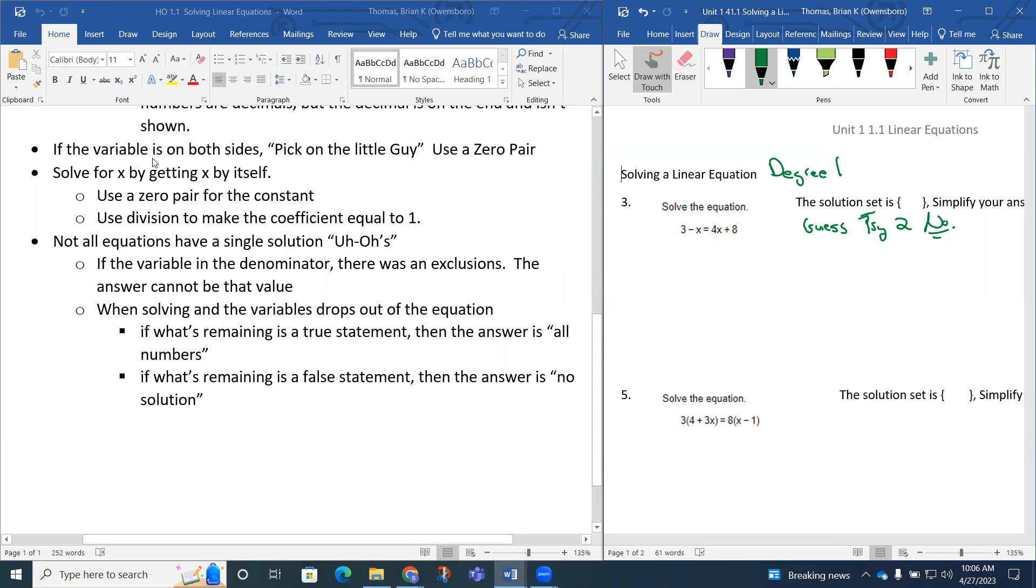The next thing we want to do is, if the variable is on both sides, pick on the little guy and use a zero pair. Notice how x is on both sides. There's a negative x and a positive 4x. The negative number is considered the little guy. I want to use the zero pair of negative x, and the opposite of negative x is positive x. So I want to add x here. The property of equality says whatever you do to one side, you have to do to the other side. Since it's a like term with the 4x, I'm going to add x to this side of the equation.